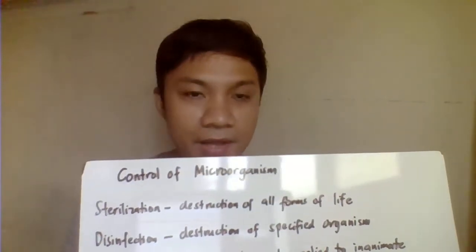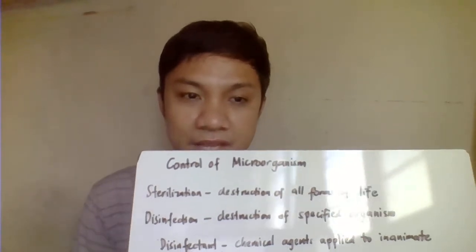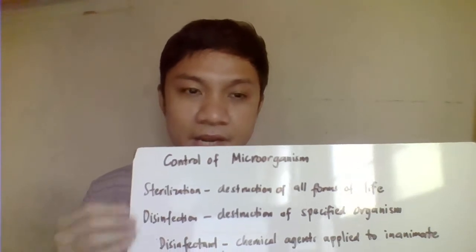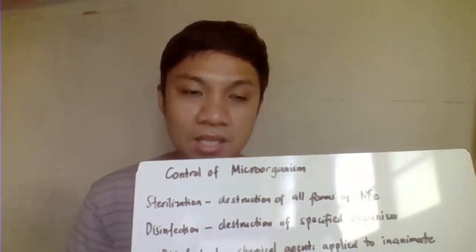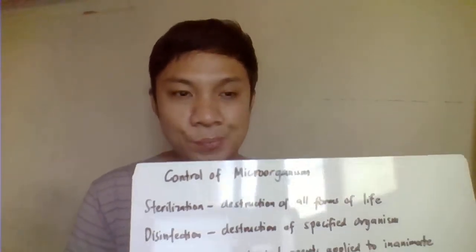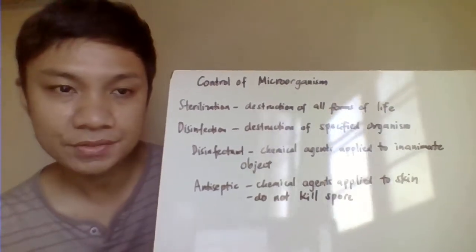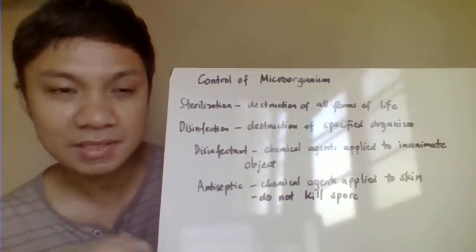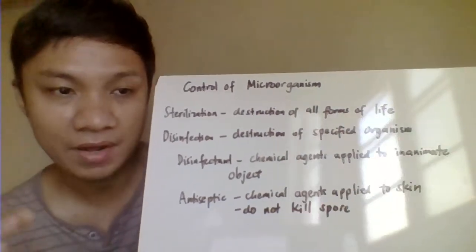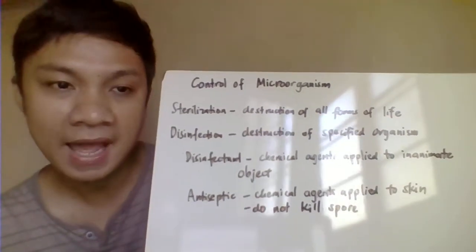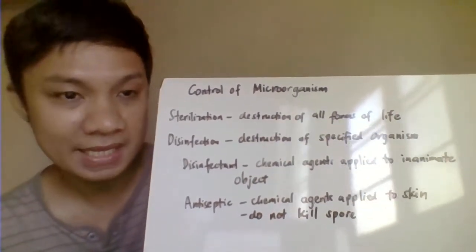Today we're going to discuss microbial control — specifically the methods of sterilization and disinfection, and the differences between them. Sterilization is a process whereby you kill or destroy all forms of organisms, regardless of type. It is regarded as the highest form of killing process. Disinfection, on the other hand, only kills specified microorganisms — not all life forms.